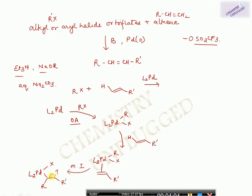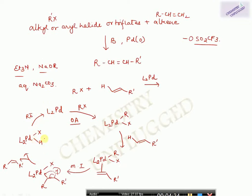The next step is beta-hydrogen elimination: a hydrogen from the beta position is removed, this shifts to give L₂Pd(X)(H), and the alkene product is formed. After reductive elimination you get your catalyst back, and HX is removed in the presence of base. This mechanism is very important to remember.